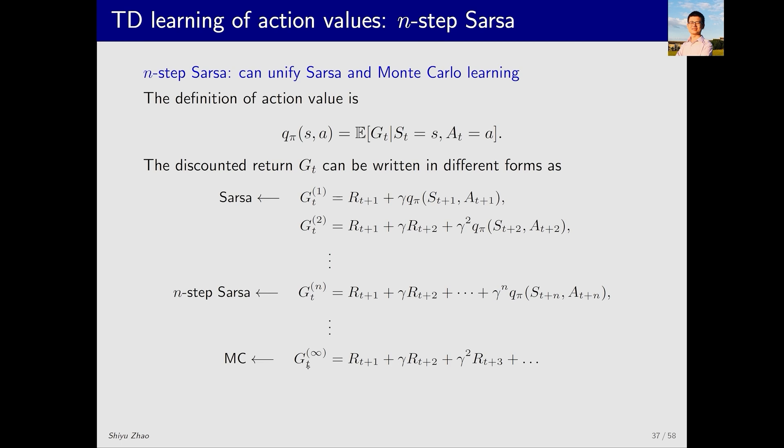When N approaches infinity, we get GT infinite, which equals RT plus 1 plus gamma RT plus 2 and so on up to the end with no Q pi term. All subsequent rewards are immediate rewards at different time steps. In fact, GT1 corresponds to SARSA and GT infinite corresponds to Monte Carlo. Any in-between form corresponds to N step SARSA. We will discuss this in detail later.